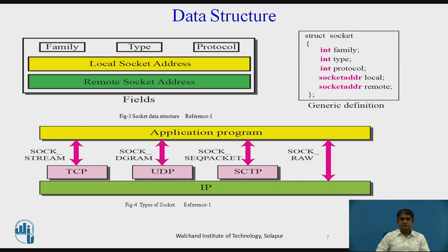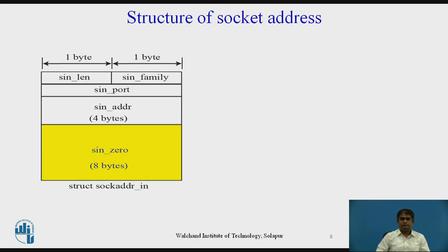The local socket address field defines the local socket address. A socket address is a combination of IP address and port number. The remote socket address field defines the remote socket address. Before we move forward and use sockets, we need to understand the structure of a socket address — a combination of IP address and port number.